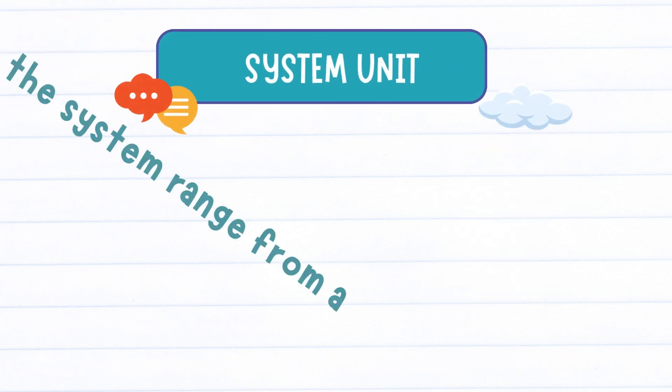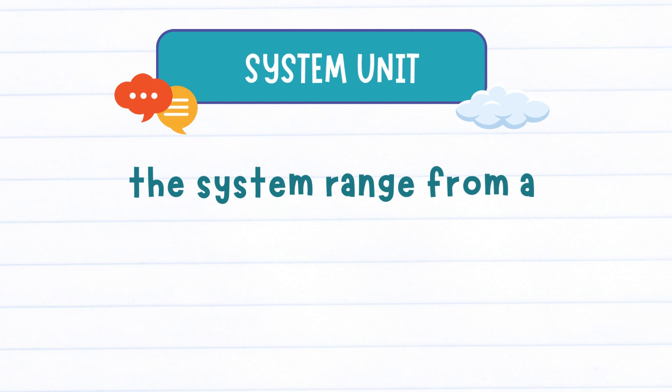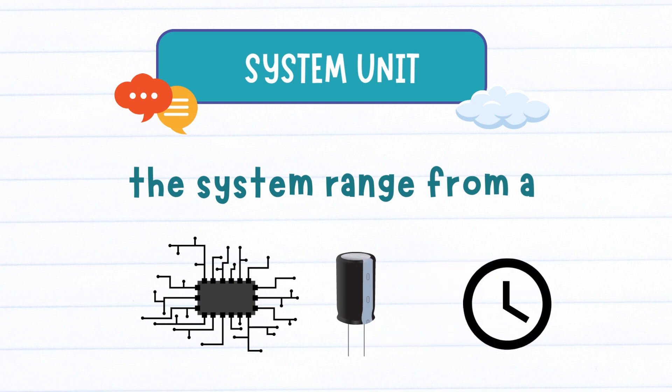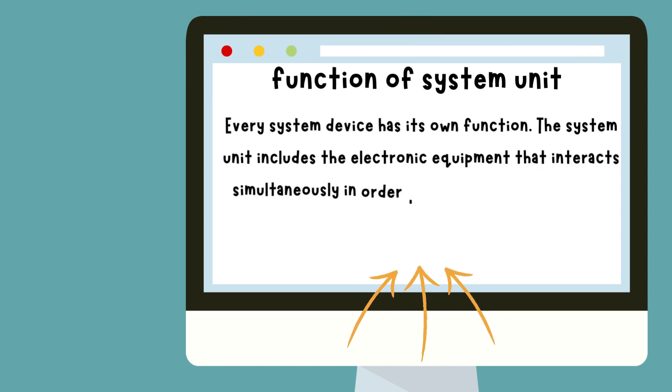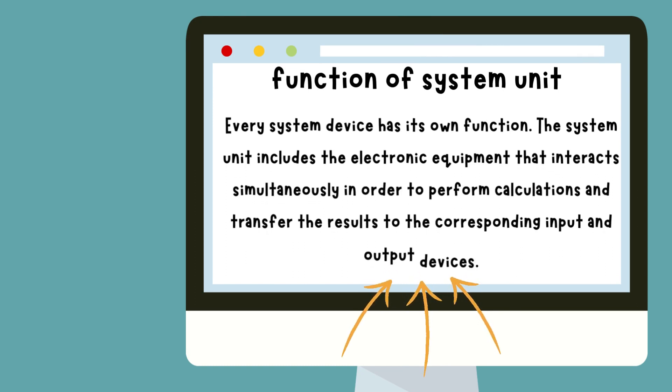These functions can range from a microprocessor to a capacitor to a system clock. All these small functions are divided among different components of the system unit, so every system device has its own function. The system unit includes the electronic equipment that interacts simultaneously in order to perform those calculations.